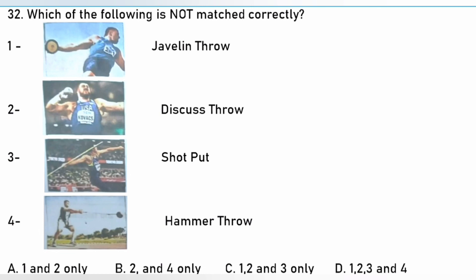Which of the following is not a track and field event? Javelin throw, Discus throw, Sawtooth, Hammer throw. The answer is C. Sawtooth. First, second, and third are all valid track and field events.